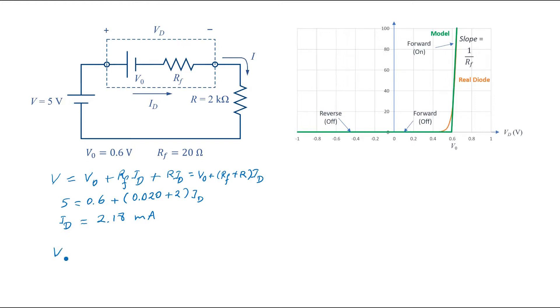The voltage across the diode VD is a combination of the V0 and the voltage drop across the resistor RF. So we can write V0 plus RF times ID.